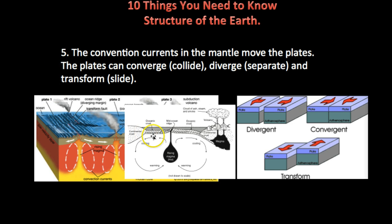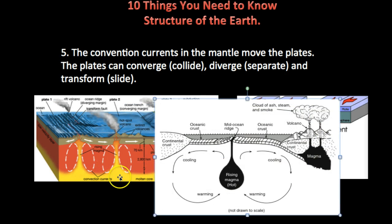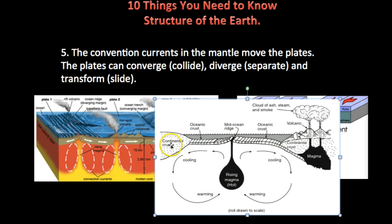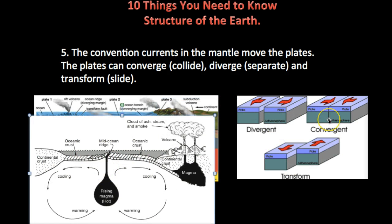The convection currents in the mantle — with the hot magma starting to go up, then cooling and sinking down — actually cause the plates to move. And they can move in three major ways: divergent, when they spread apart; convergent, when they come together, which can make lots of mountains; and transform, which are the ones that mostly cause earthquakes.